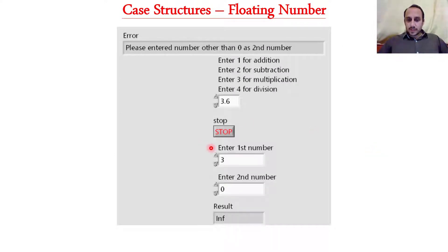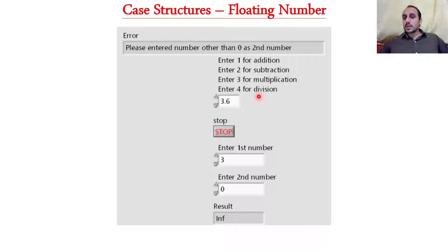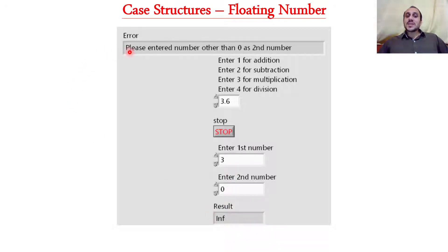So this is the front panel. The user has to enter the first number, then the second number, and then select the case. There are some instructions for the user: enter one for addition, enter two for subtraction, enter three for multiplication, enter four for division. So if the user enters 3.6, it will be rounded to four, and four is division. So these two numbers are dividing, and you are getting infinity because the second number is zero, and you are getting an error message: please enter a number other than zero as the second number. You will not get this message in other cases. So now we will do it in LabVIEW.